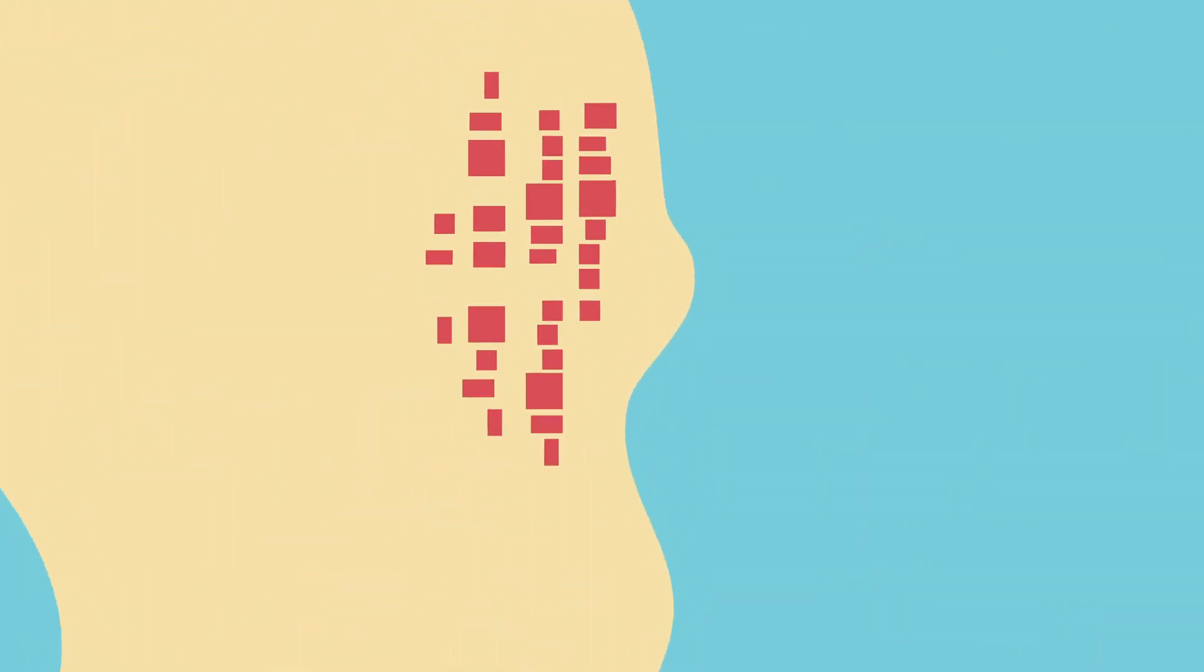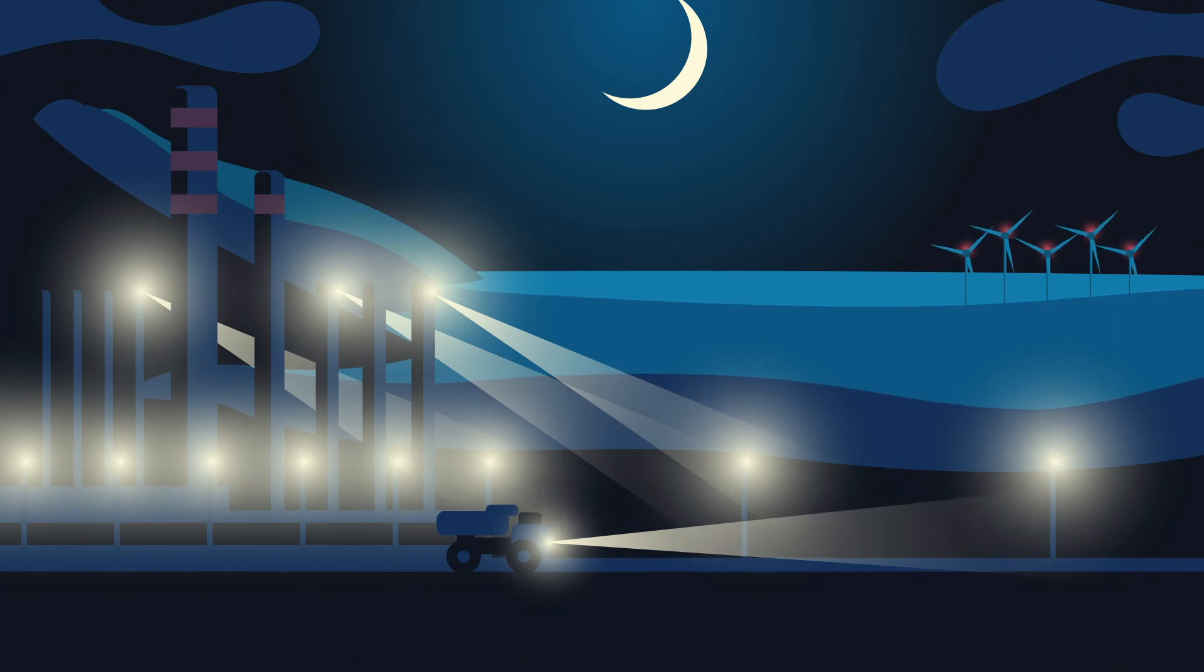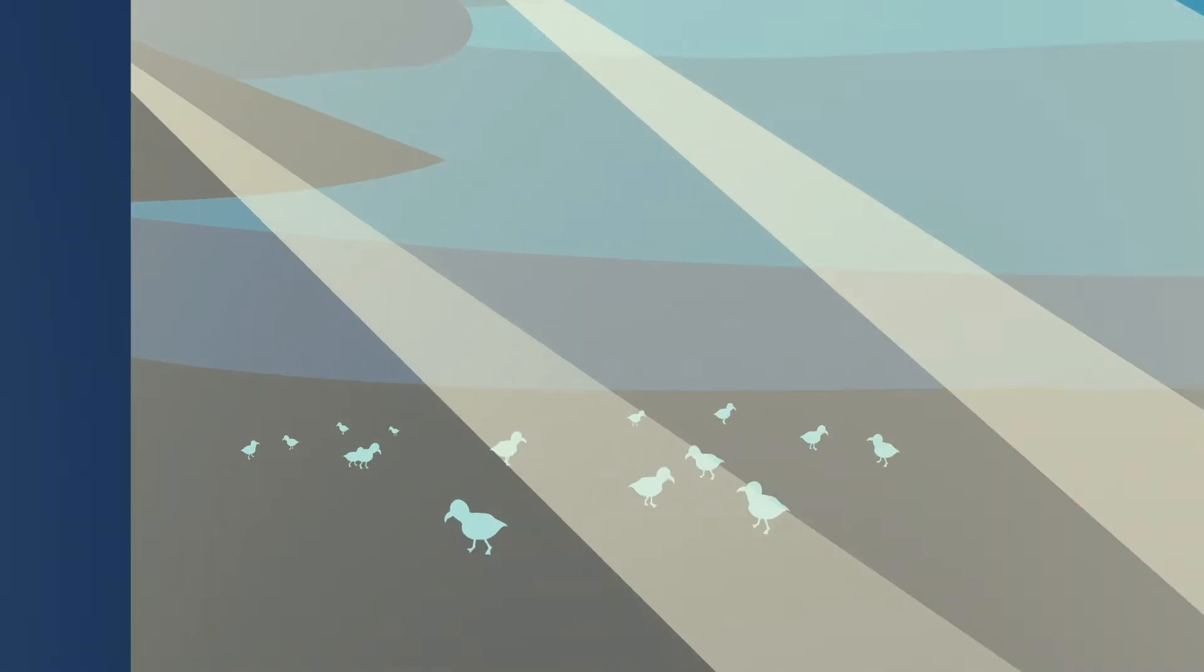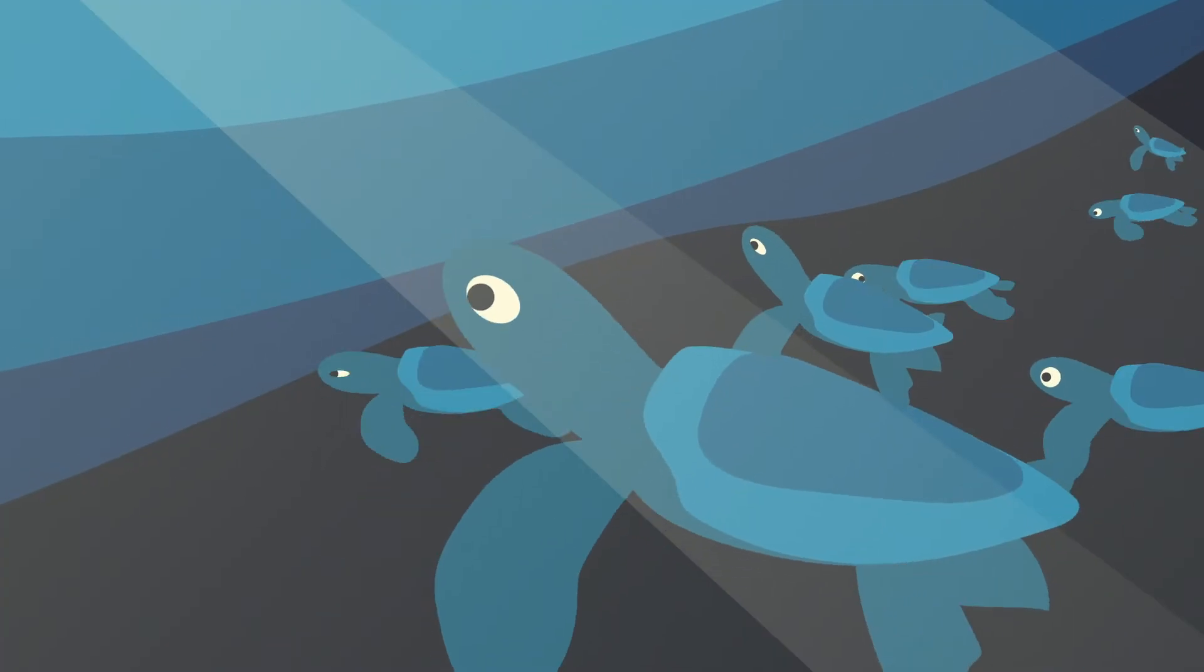BOEM must also consider the impacts on coastal and human environments. Artificial lighting from both onshore and offshore infrastructure and vessels can disorient thousands of young seabirds and sea turtle hatchlings heading out to sea.